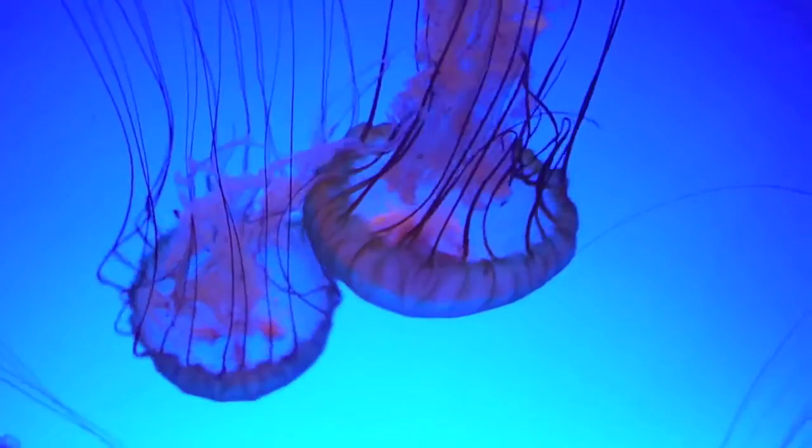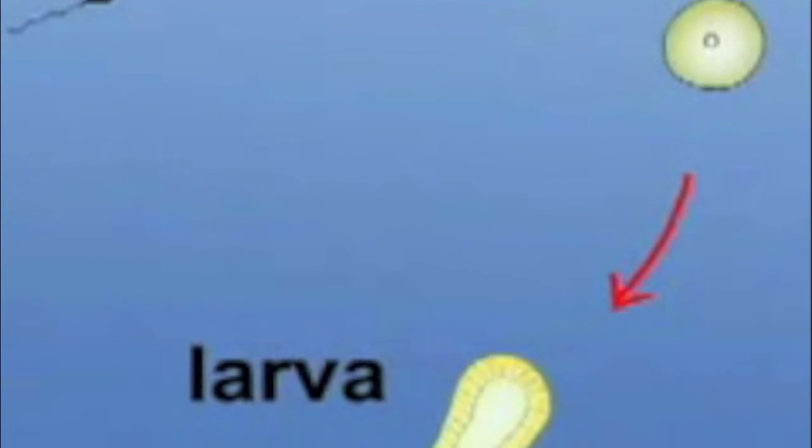Reproduction begins when the male releases sperm through its mouth into the surrounding water. These swim to the female, where they enter her central oral cavity to reach the eggs. Once fertilized, the zygotes emerge onto the oral arms to develop for a time, becoming larvae which settle on the bottom of the ocean.